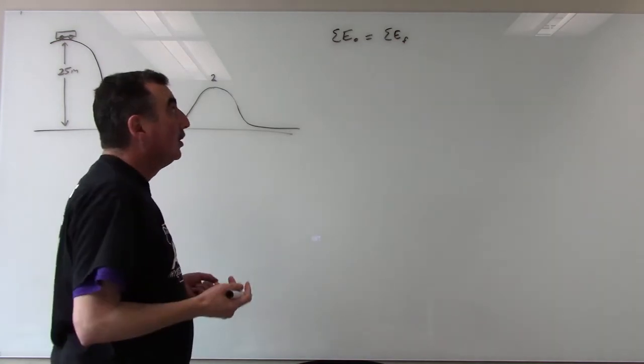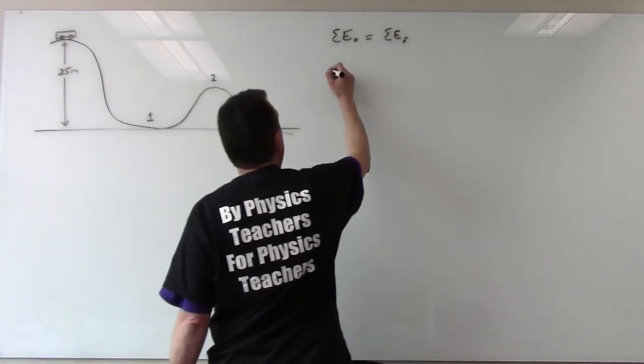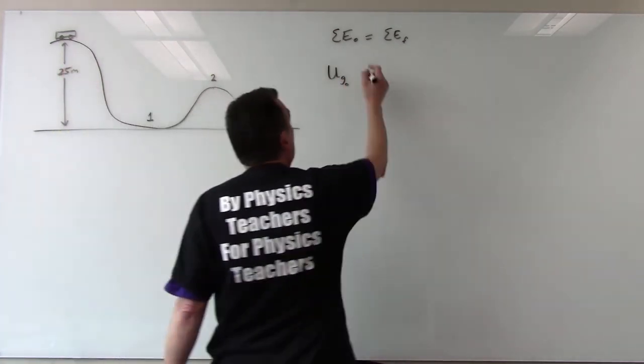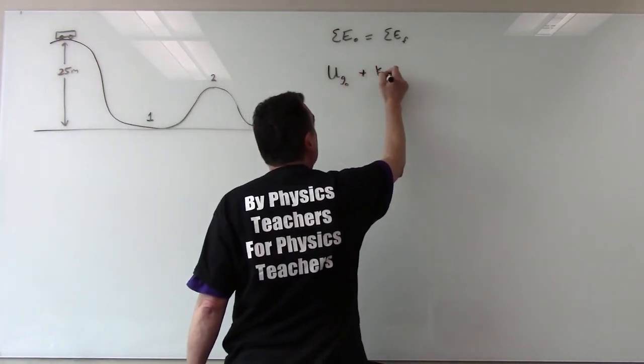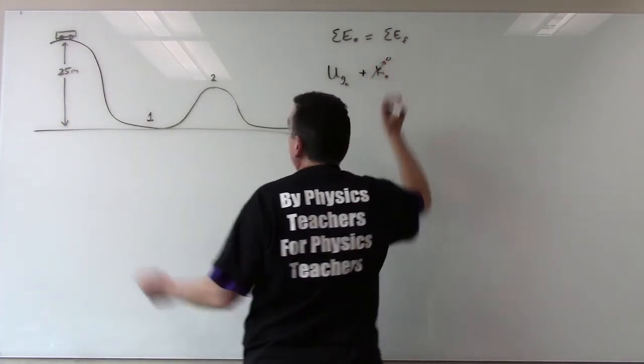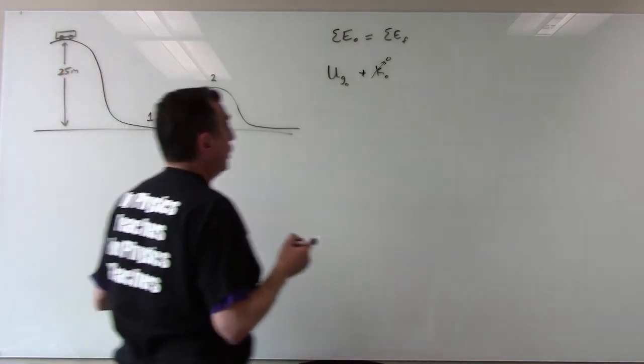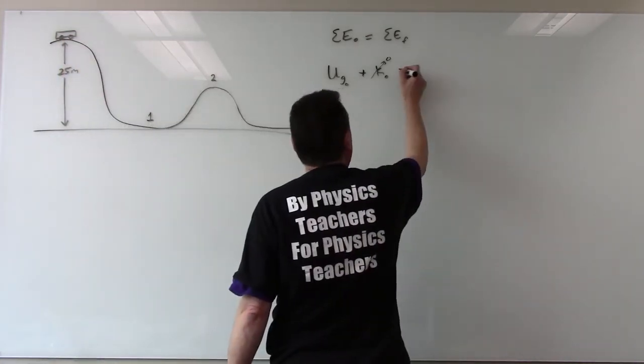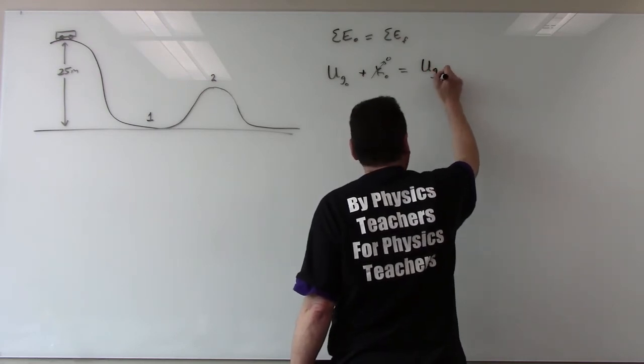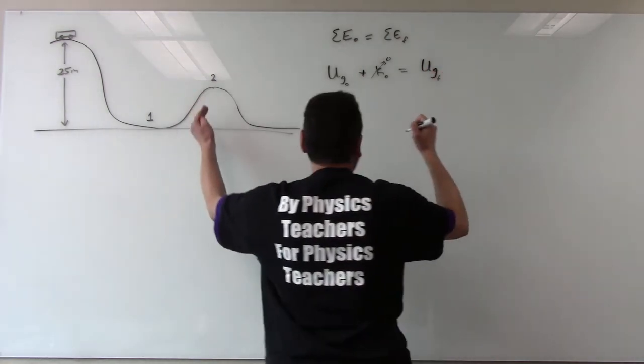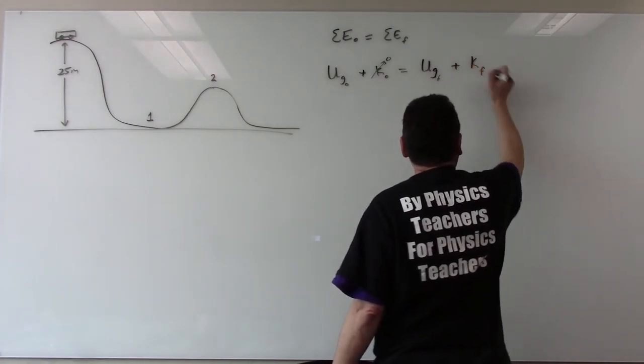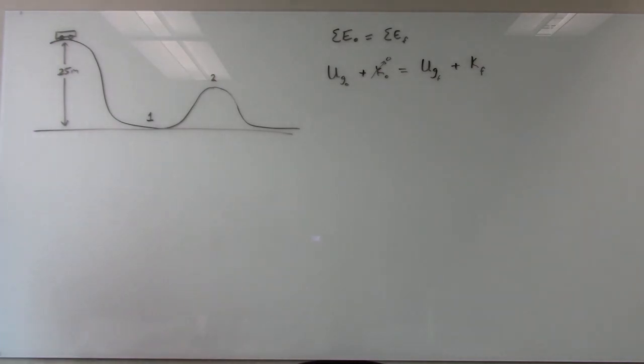So, what this equation is going to break down to is we have gravitational potential energy initial at the very top. We have kinetic energy initial at the top, but in this case it's zero, because there's no motion. It's going to get motion from dropping. It's going to be equal to gravitational energy final at whatever position it's at plus the kinetic energy final at whatever position it's at.